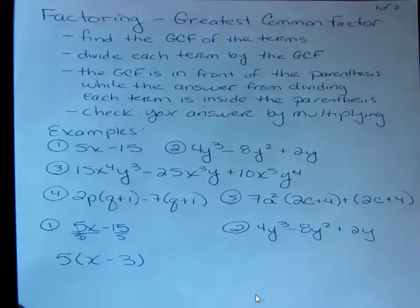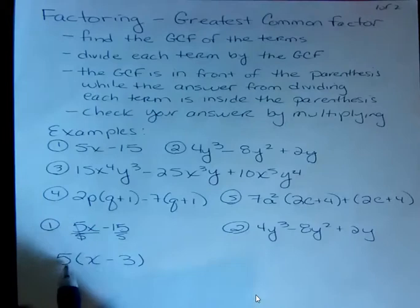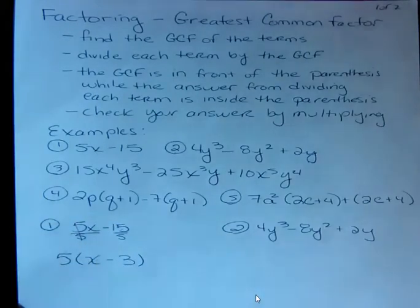I can always check by multiplying. 5 times x is 5x, 5 times 3 is 15. The sign matters, but you can see I kept the minus sign there.